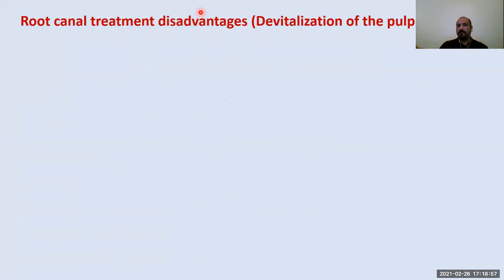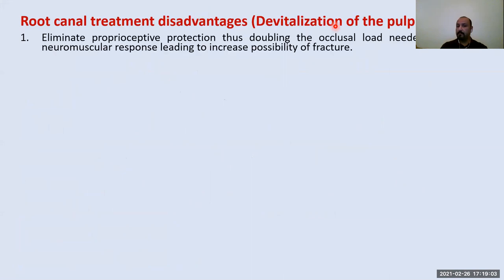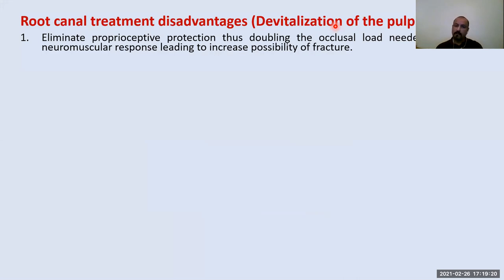There are many disadvantages. First, elimination of proprioceptive protection — this will double the occlusal load needed to provoke a neuromuscular response, increasing the possibility of fracture. If you have two teeth, one with root canal treatment (non-vital) and the other vital and functioning well, you need double the occlusal load to provoke the neuromuscular response on the endodontically treated tooth, increasing chances of fracture.